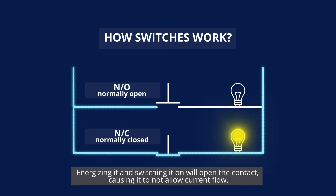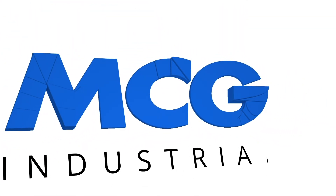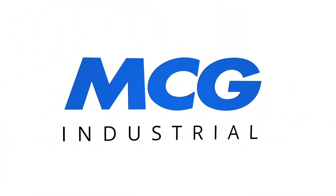Energizing it and switching it on will open the contact, causing it to not allow current flow. With this, we'll conclude our video on how switches work.